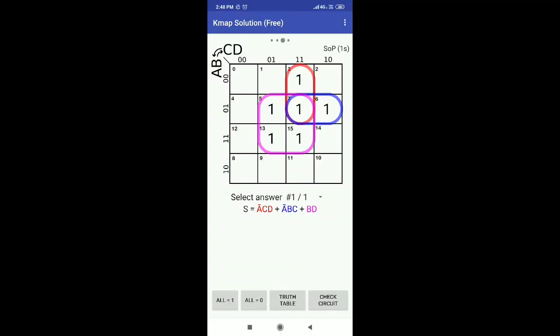If you keep on clicking on the cells, they will get automatically grouped with some different color and the expression will also get automatically calculated and displayed. This is how we can reduce the SOP form of the expression using K-map solver application.